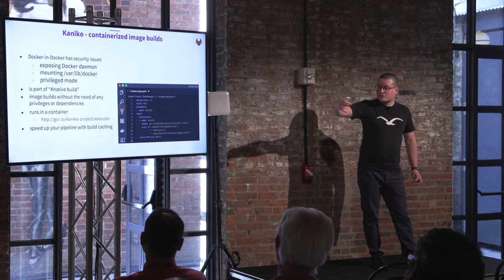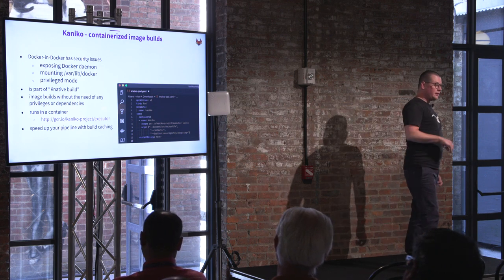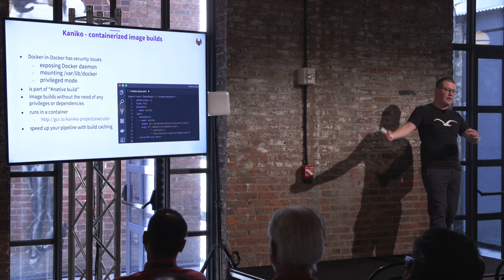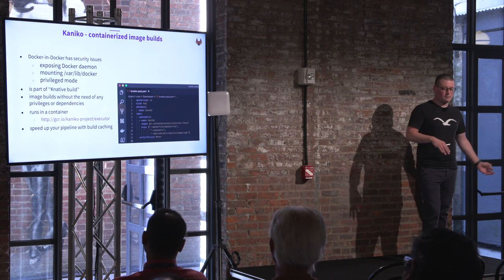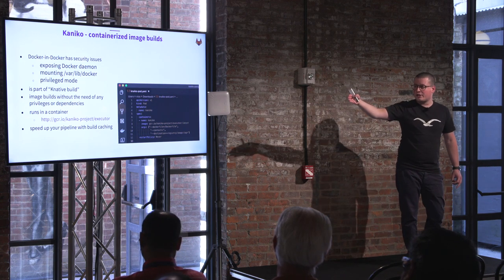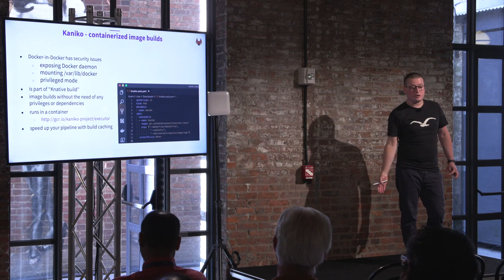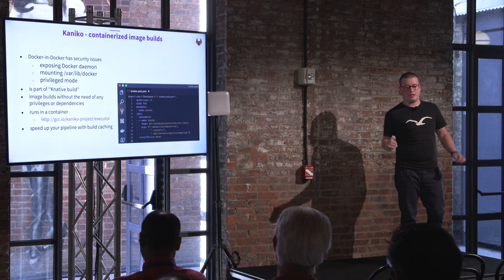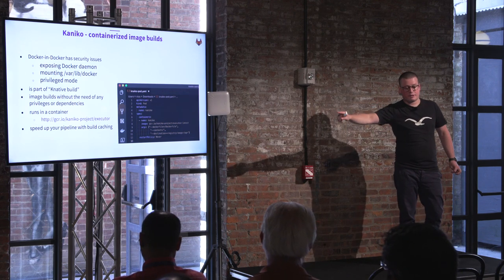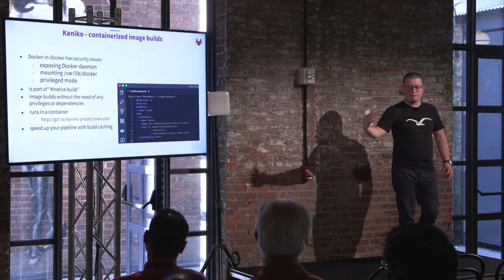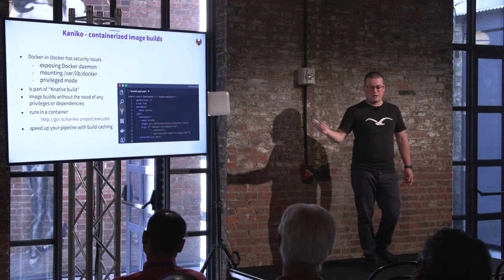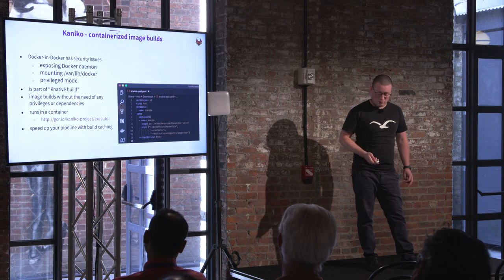With just two or three lines you can run your image build within your Kubernetes cluster. You can also speed it up using caching. With GitLab you have two options: either use GitLab caching itself, or Kaniko caching, which means Kaniko caches the different layers within the same Docker registry and pulls them every time to speed up the whole process.